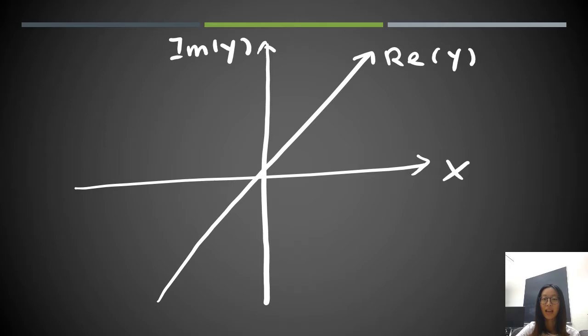To visualize this, we can set up a 3D coordinate system with three axes: x, the real part of y, and the imaginary part of y. When x is between -1 and 1, y is real. So we draw on the plane of x and the real part of y, which is horizontal in our graph. This plot is our usual circle, y = ±√(1-x²).